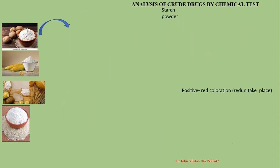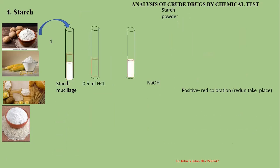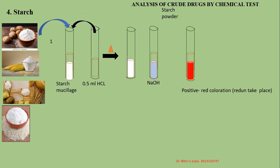The next test: take the starch mucilage, add 0.5 ml of hydrochloric acid, and heat the mixture. A white turbidity is formed. When sodium hydroxide solution is added to this turbidity, a red coloration is formed. That is a positive test because reduction takes place in this case.